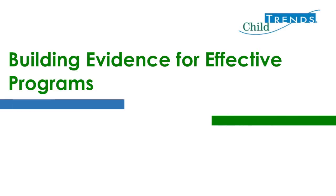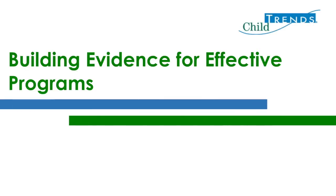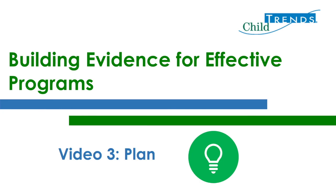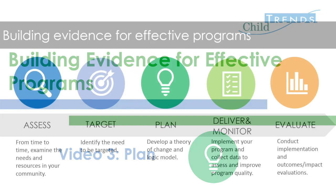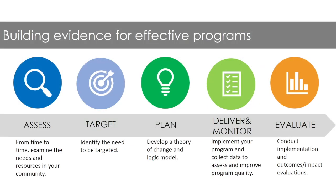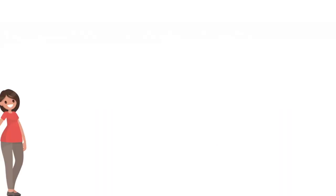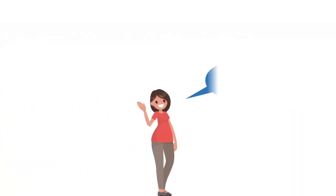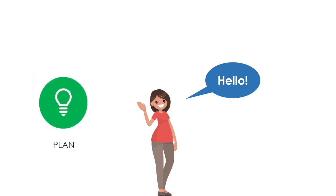Welcome to the third video in Child Trends' six-part series on building evidence for effective programs. In this video, we'll introduce you to the third step of a five-step, data-driven process to support the delivery of effective youth programs. Then we'll meet Maya, the director of an academic tutoring program at a youth-serving nonprofit organization, and check in to see how she and her team implemented Step 3.